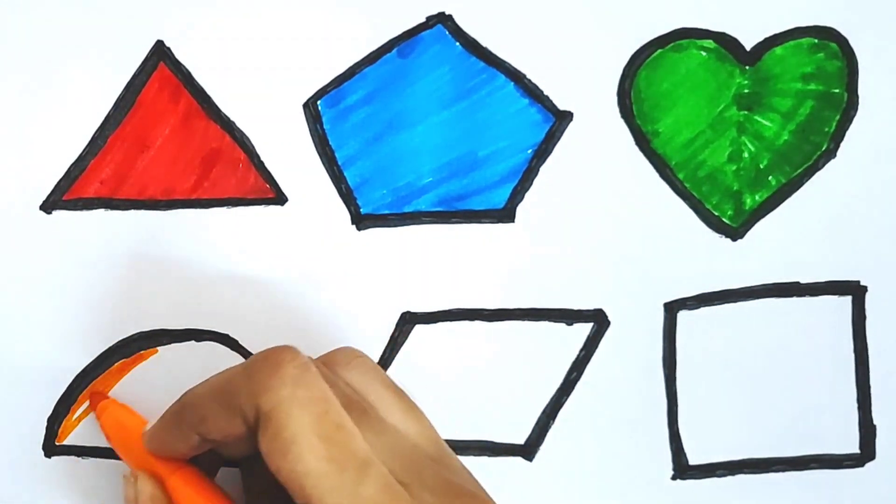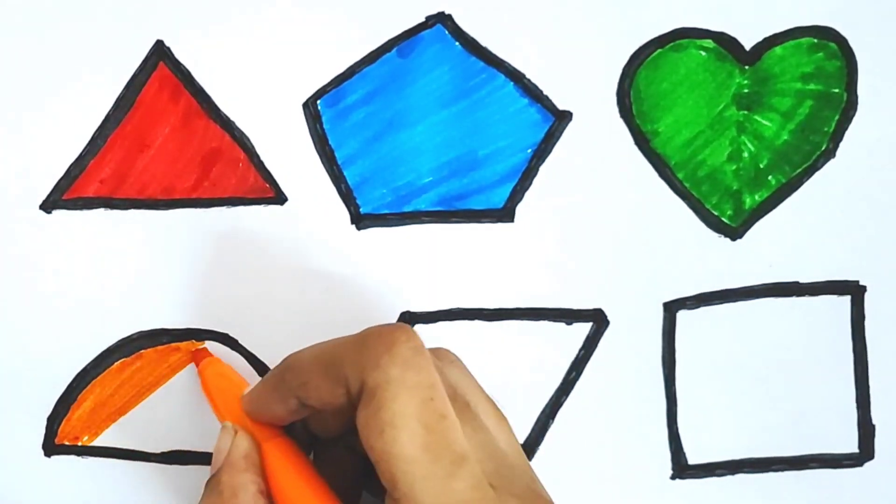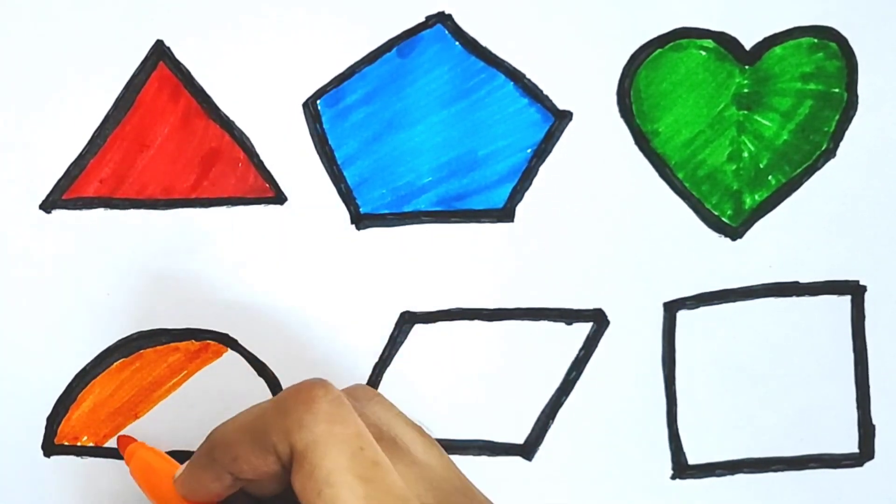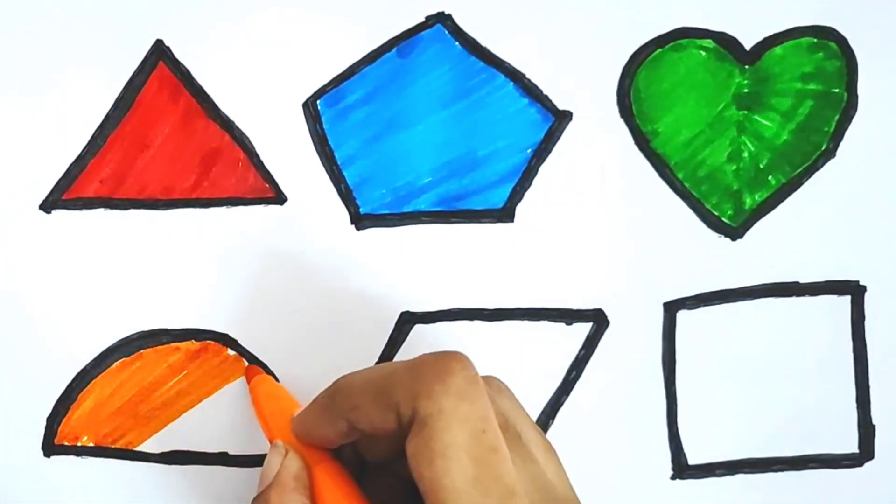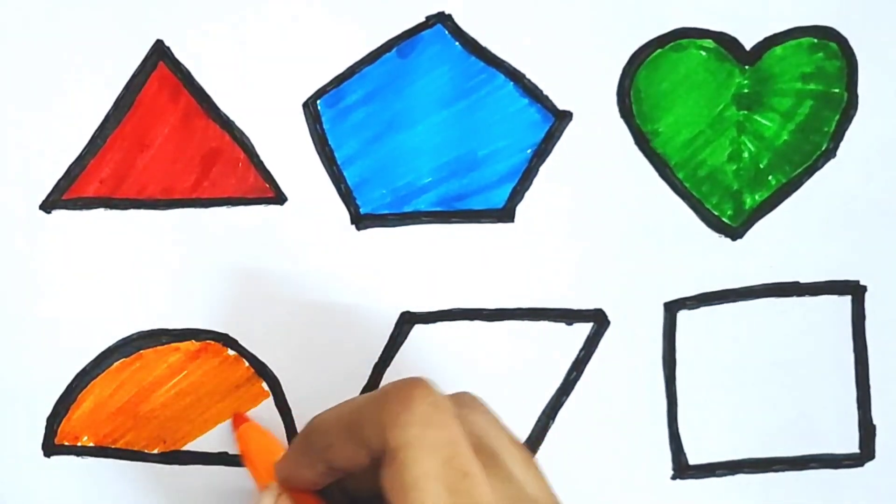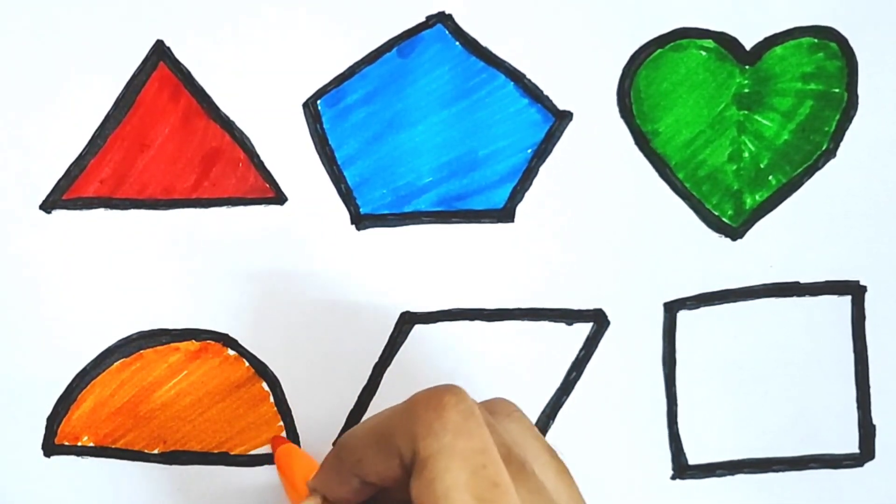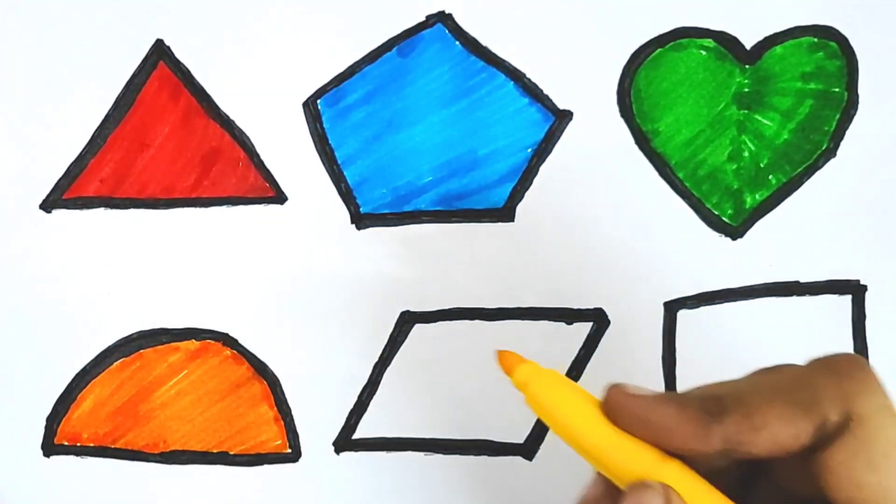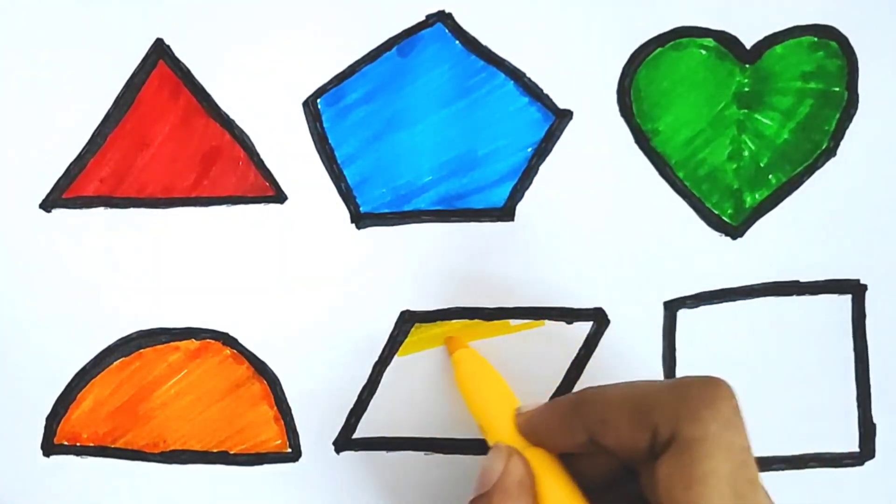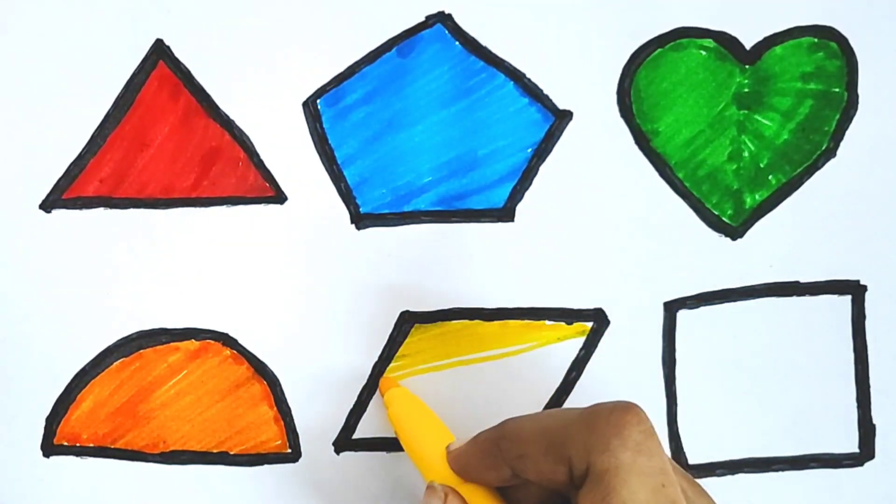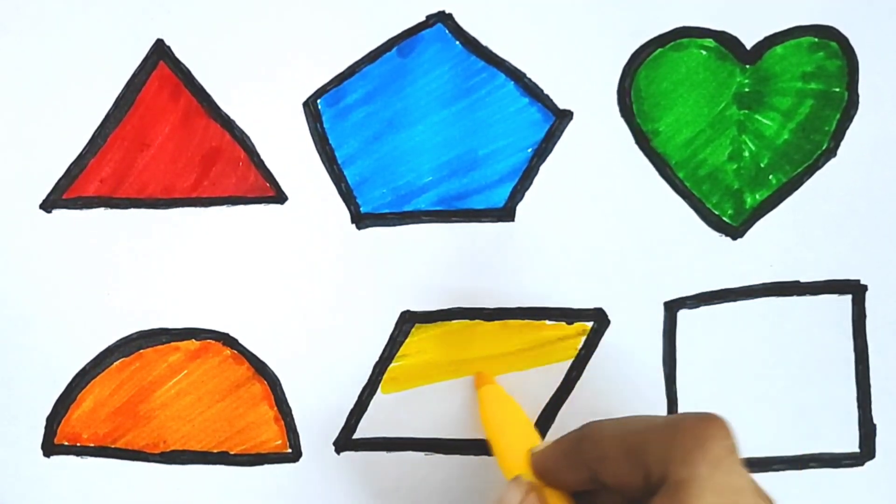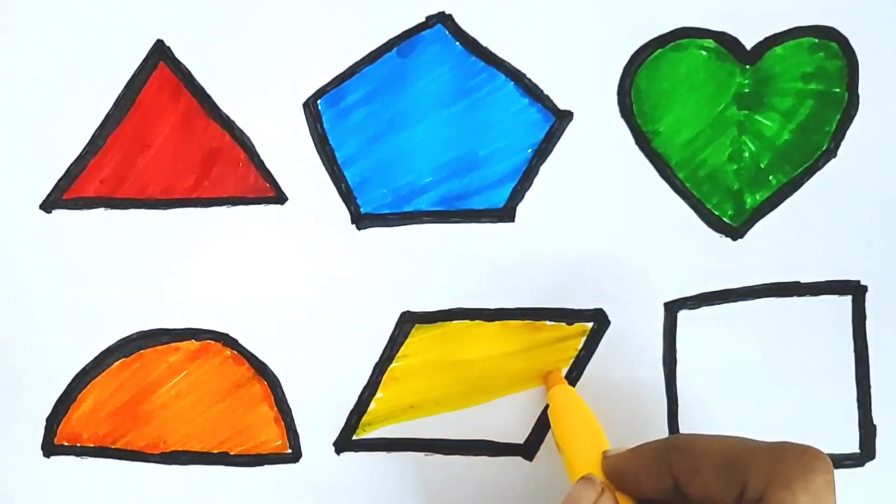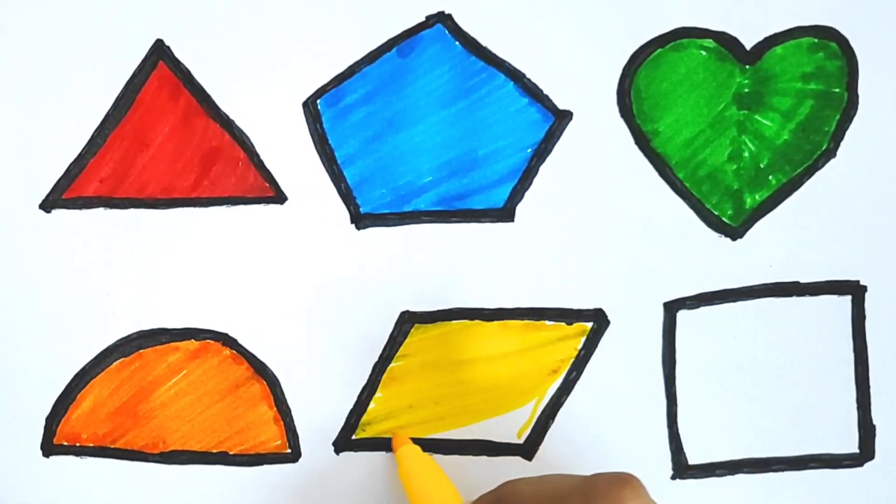Orange color semicircle. Yellow color rhombus.